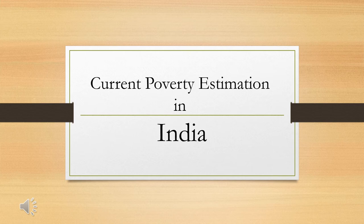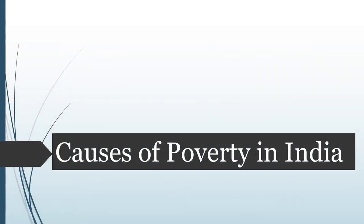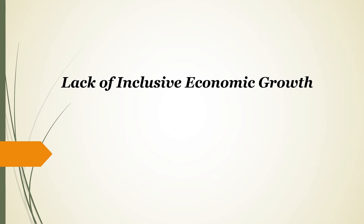Now we are discussing the causes of poverty in India. The first important reason for mass poverty prevailing in India is the lack of adequate economic growth. In the first three decades of planned development during 1951 to 1981, the annual average growth in national income had been 3.6 percent. In the next two decades during 1981 to 2000, national income increased on an average by 5.5 percent per annum. With about 2 percent per annum growth in population, per capita income rose by 3.5 percent, which resulted in some decline in the poverty ratio in rural and urban areas.